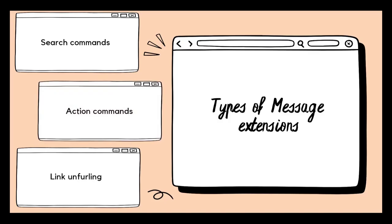A scenario where search commands are useful is if you want to look up a product and share it with your team. Action commands collect information from the user using an input form or a dialogue and post that information back to a web service or right into a conversation — useful, for example, if you want to create a new product. Link unfurling allows you to embed a link in a message into a detailed card.